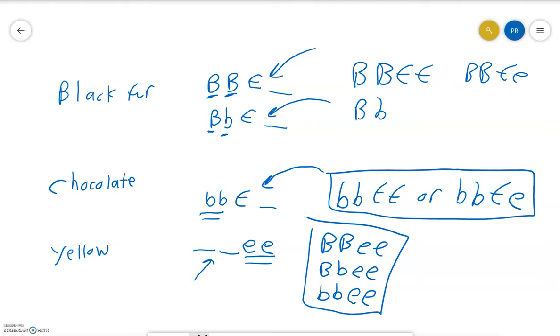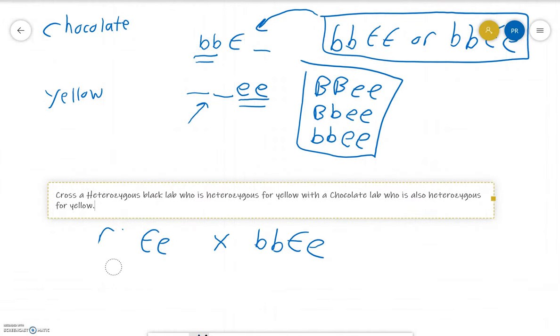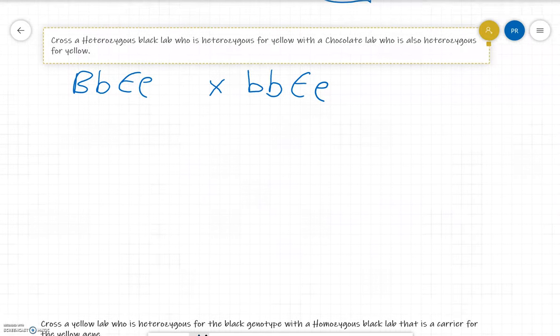Let's practice one. This is totally optional if there's no interest to you, but it's a good way to review Mendelian genetics with a different spin. We need a heterozygous black lab BbEe who is heterozygous for yellow, crossed with a chocolate lab bbEe who's also heterozygous for yellow. This looks like a dihybrid and you have to treat it like a dihybrid.